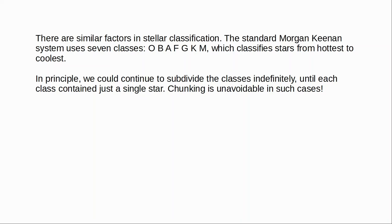Chunking is unavoidable in cases like this. We place stars together in a single class when they have certain features which are similar enough to some standard ideal star — we can specify the kind of ideal O-type star, the ideal B-type star, and then group stars on the basis of how similar they are to that ideal or exemplar.